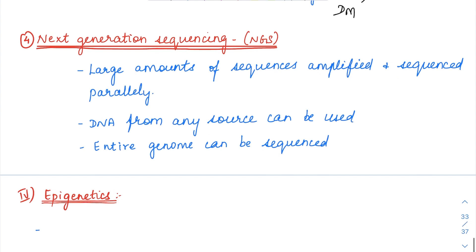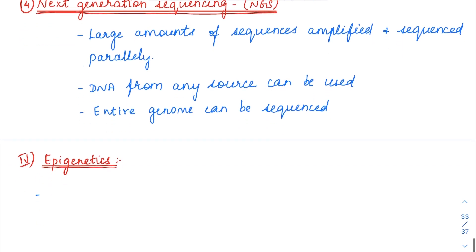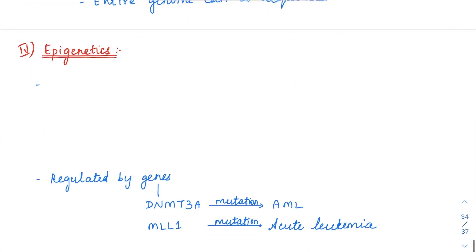The last technique is next generation sequencing, which is the newest technique. In next generation sequencing, large amounts of parallel sequencing can happen — multiple sequences can be simultaneously amplified and sequenced in a parallel manner. They take very short sequences, amplify them, and simultaneously sequence them. This is the best technique, and with NGS you can literally sequence the entire human genome.